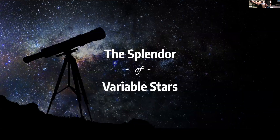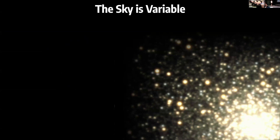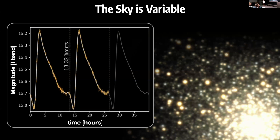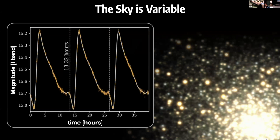I want to tell you why I decided to focus on this extraordinary set of data about variable stars. So let's begin with the splendor of variable stars. A first basic fact is that the sky is variable. Here's one night of observations of the globular cluster M3, where there's about half a million stars. You can see these stars are changing in brightness over time. If we look at one particular star, every 13 hours, like clockwork, it shoots up in brightness and then slowly decays away.